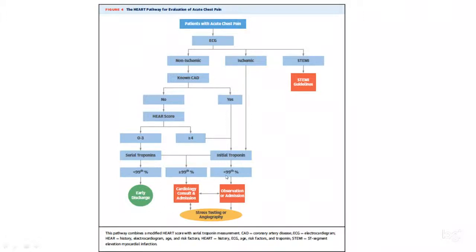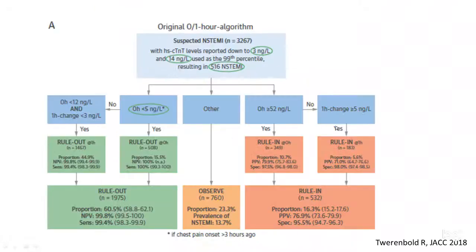The 99th percentile means that if you measure 1,000 patients, 99% of those patients will have a troponin less than 18. A troponin less than 18 is negative. If the troponin is more than the 99th percentile, the patient is having some type of myocardial injury. This varies by assay but averages around 17 to 19 for men and 11 to 13 for women.